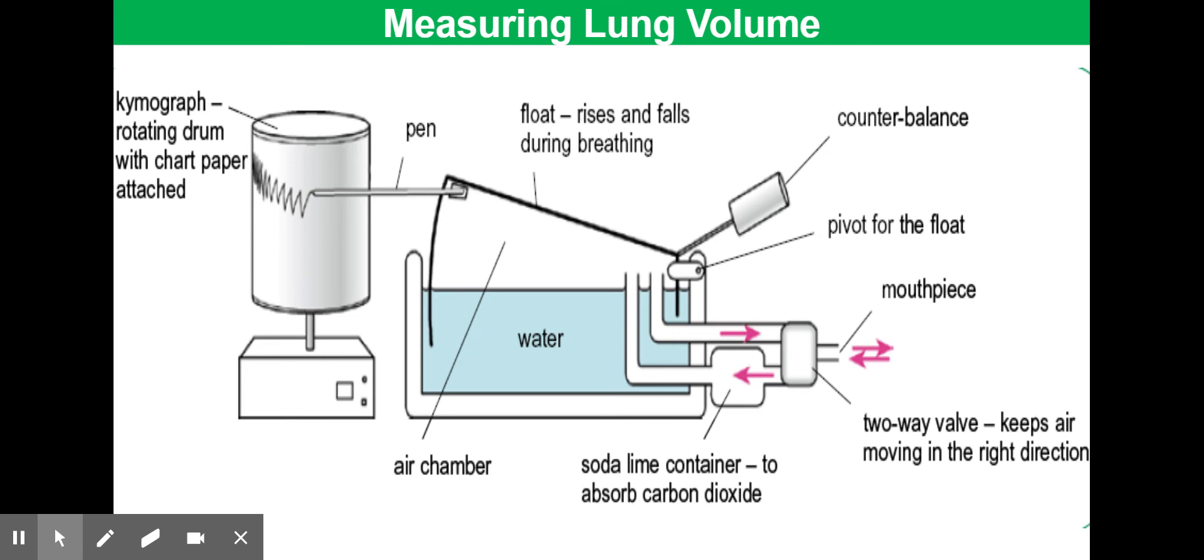This decrease can be observed and measured on the spirometer trace. We can assume that the volume of carbon dioxide released and absorbed by the sodalime equals the volume of oxygen absorbed by the blood. Therefore, measuring the gradient of the decrease in volume enables us to calculate the rate of oxygen uptake.